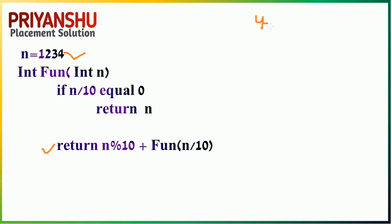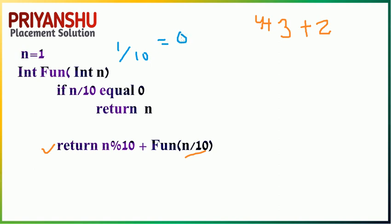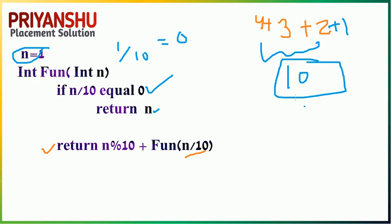So we get 4 plus f(123). For n=123: 123 mod 10 is 3, plus f(12). For n=12: 12 mod 10 is 2, plus f(1). For n=1: 1 divided by 10 is 0 — condition is true, return 1. So total is 4 plus 3 plus 2 plus 1 equals 10. The function returns 10.